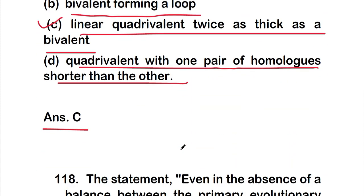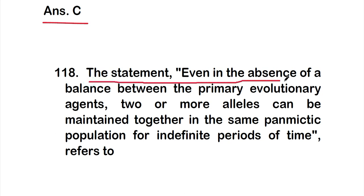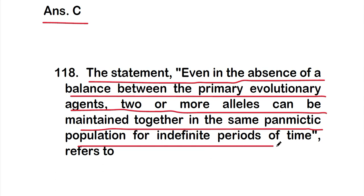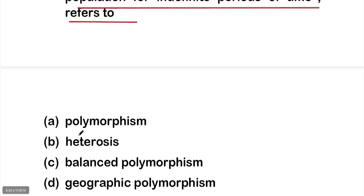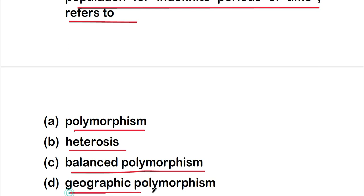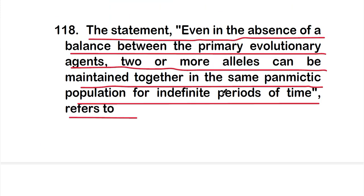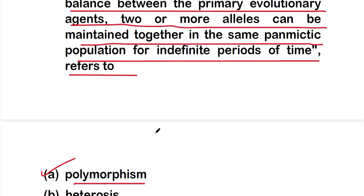Question 118: the statement 'even in the absence of a balance between the primary evolutionary agents, two or more alleles can be maintained together in the same panmictic population for indefinite periods of time' refers to: Option A polymorphism, Option B heterosis, Option C balanced polymorphism, Option D geographic polymorphism. The right answer is Option A — polymorphism.